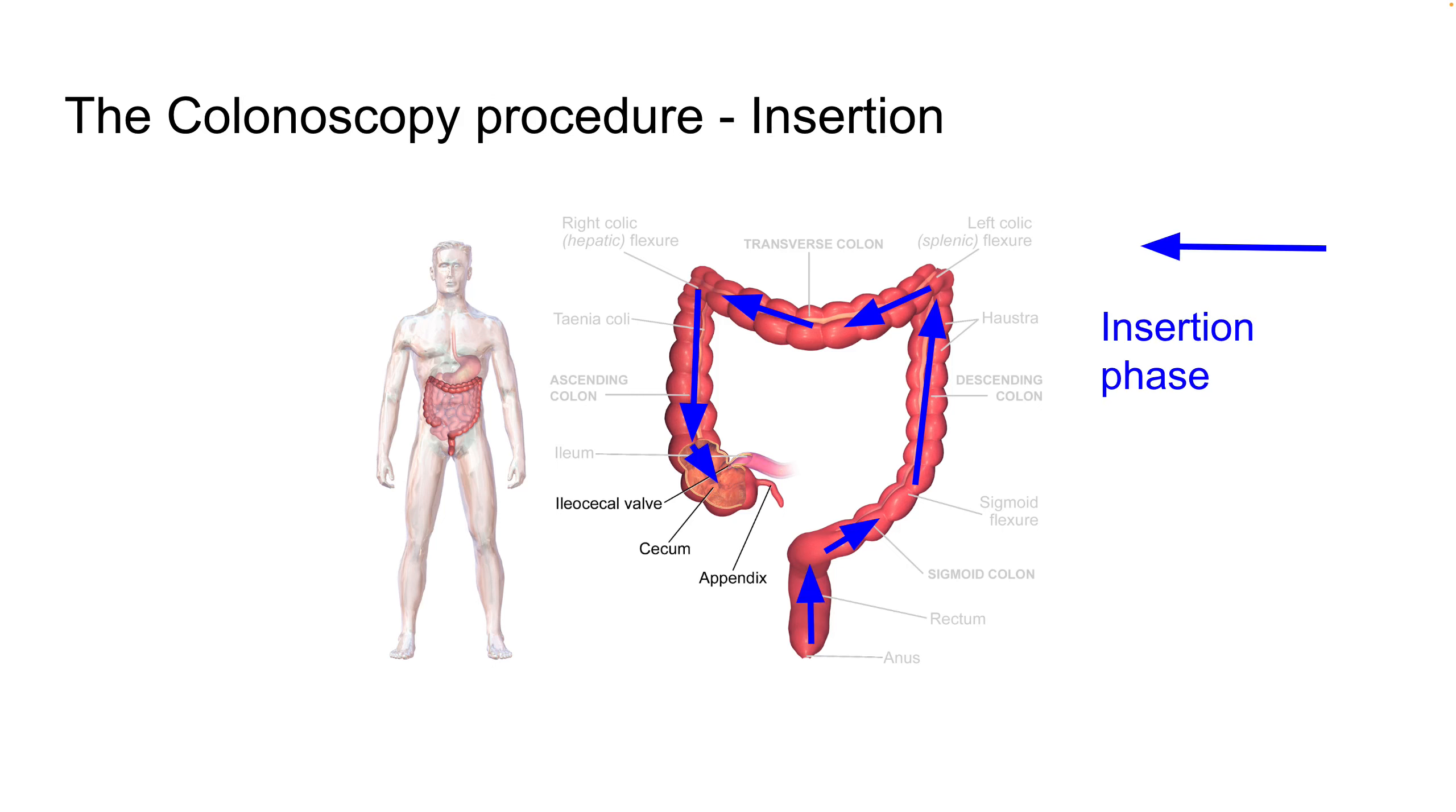So what is the colonoscopy procedure? The colonoscopy procedure has two phases. In the first phase, the insertion phase, the practitioner gets a scope, a camera, into the colon all the way to the beginning of the colon called the cecum. This is a very technically challenging part. Navigating through the colon is not easy.